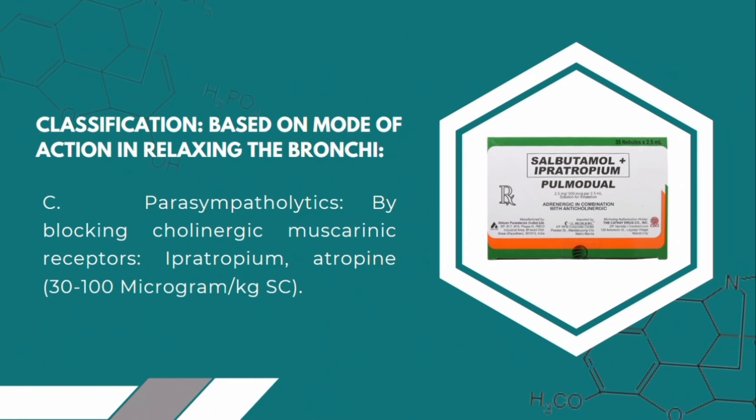Class C: Anticholinergics act by blocking cholinergic muscarinic receptors. Example: ipratropium bromide. It causes the greatest bronchodilation with fewer side effects.